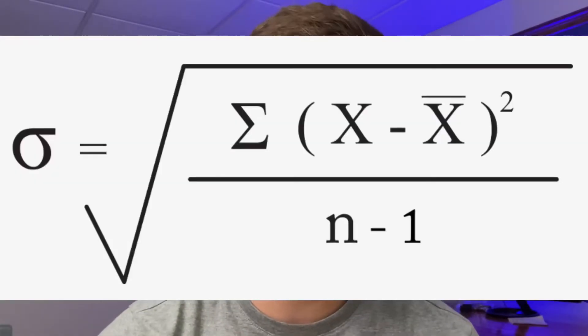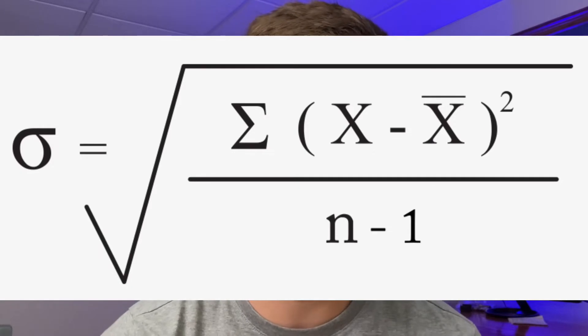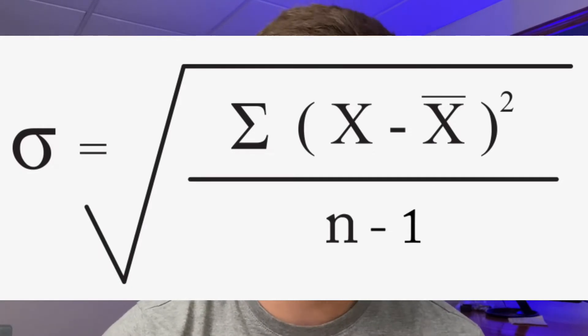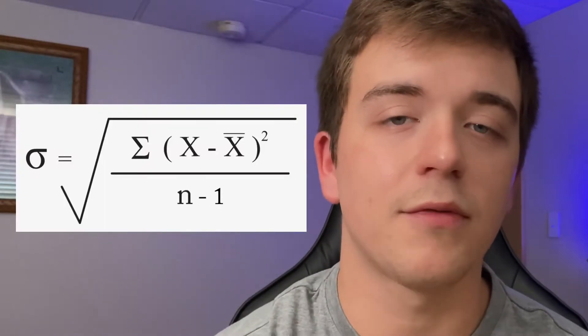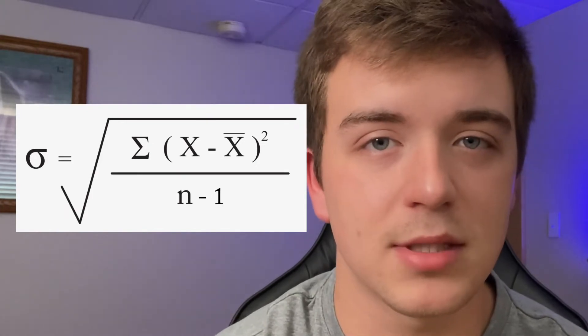First up, we're just going to start with the easy stuff — basic math and algebra. I have to mention it because it is used a lot. So let's just look at the standard deviation formula — this is one you'll use a lot. We have to do square roots, summations, subtraction, squaring, and division. Those are all basic math operations, and if you haven't seen them, they're really not hard to learn. Algebra comes in when you want to solve for one of the other variables — for example, solving the standard deviation formula for n to find the population size.